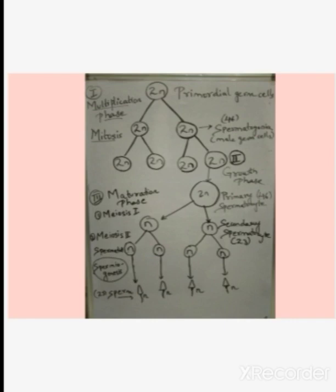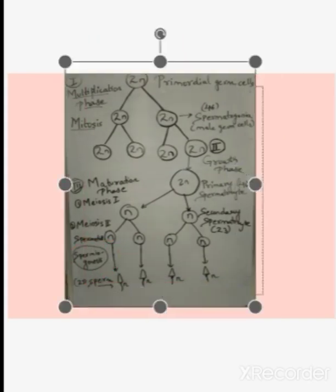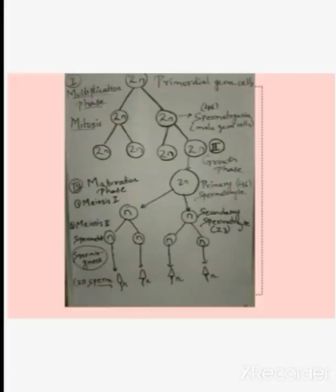The second stage is spermiogenesis. In the spermiogenesis process, sperms are formed. So spermatids undergo spermiogenesis. Through spermiogenesis, sperms are formed. Sperms will be quite light in weight compared to spermatids. Sperms are lightweight and motile, and they contain 23 chromosomes. This process is called metamorphosis of spermatids. Through metamorphosis of spermatids, sperms are formed, and sperms represent the male gamete.